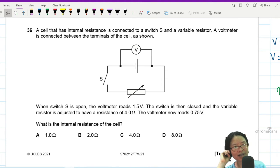Okay, question 36. A cell that has internal resistance is connected to a switch S and a variable resistor. So there's an internal resistance here. I'm just going to label some stuff: E for EMF, then R to show the internal resistance.